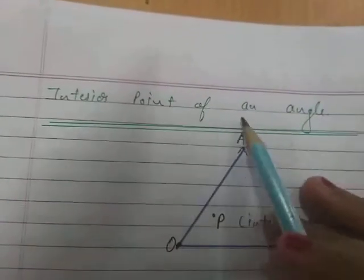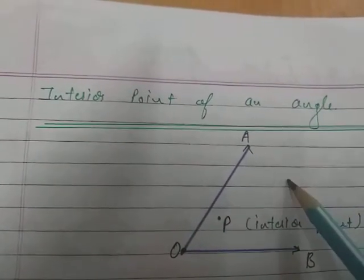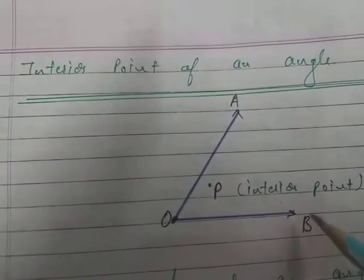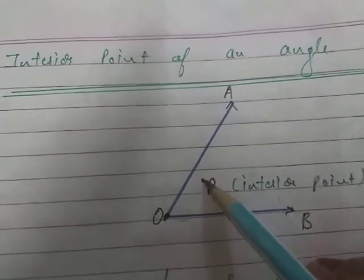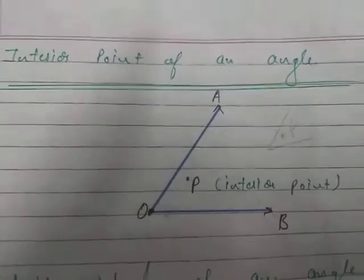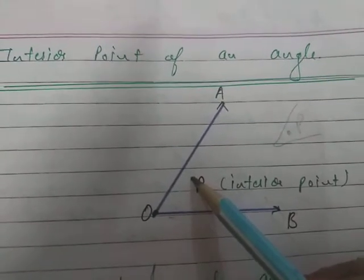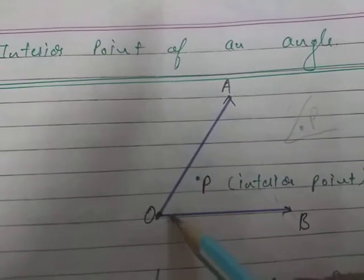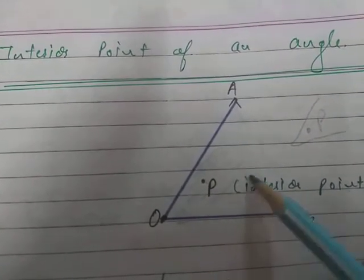An angle is two rays and one common point. An important concept is the interior point of an angle. For angle AOB or BOA, if there is any point inside the angle region, that is the interior part. We can mark a point P inside the angle, and P is called an interior point of angle AOB. This shaded part is called the interior part of an angle.